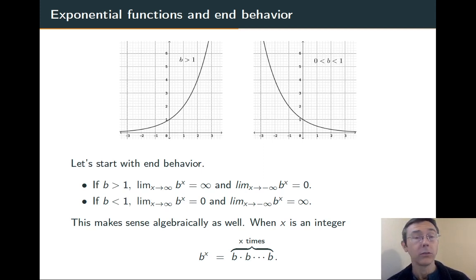That makes sense algebraically as well. At least when x is an integer, when you're raising b to the x power, you're multiplying b by itself over and over again. If b is bigger than 1, that product gets bigger with more factors. If b is between 0 and 1, that product goes towards 0 as you get more factors.